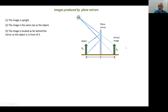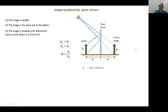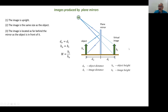We have the distances of the object and the virtual image with respect to the plane mirror, and we have these conditions: DO equals DI, HO equals HI. Magnification is defined as HI over HO.